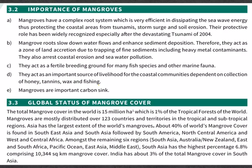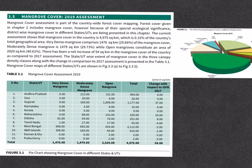Firstly, there is a total of 15 million hectares of mangrove cover in the whole world, which is about 1% of total tropical forests in the world. Asia has the largest extent of the world's mangroves. About 40% of the total world's mangrove cover is found mainly in Southeast Asia and South Asia. South Asia has about 6.8% of the total mangrove cover in the world, and of this 6.8%, India's share is merely 3%.